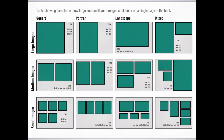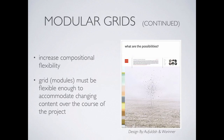Here are some sample layouts based on square, portrait, landscape, and mixed formats — showing how we would break down one large image, two smaller images, or lots of smaller images and how they work together as a theme. The more modular grids we use, the more compositional flexibility we have. We can plug information into different modules, making it easier to create varied compositions. They must be flexible to accommodate changing content, which you'll discover in depth when we get into your portfolio.